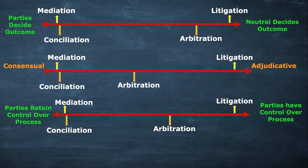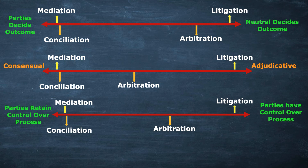'Parties have control over process' means things like collecting evidence — as in litigation, parties can hire a representative to present their matter in court. In contrast, 'parties retain control over process' means the parties themselves manage the process directly. You need to understand the difference between these two terms.